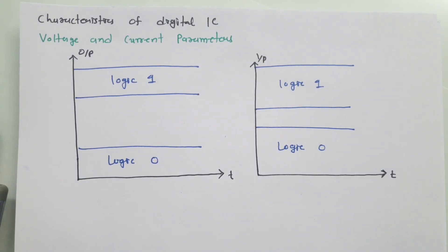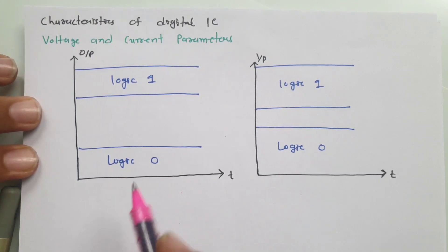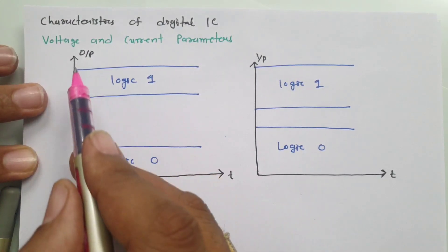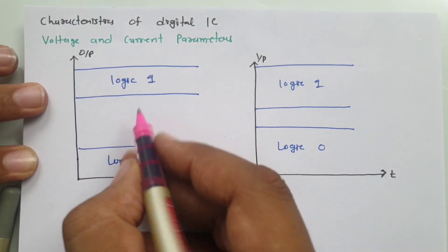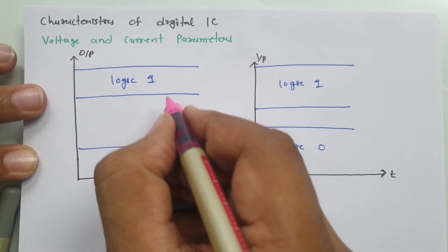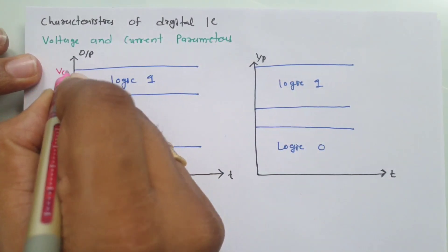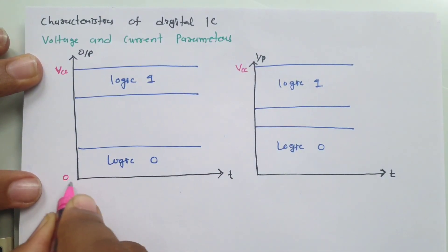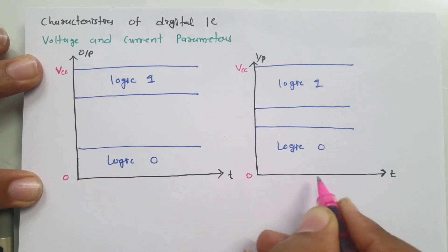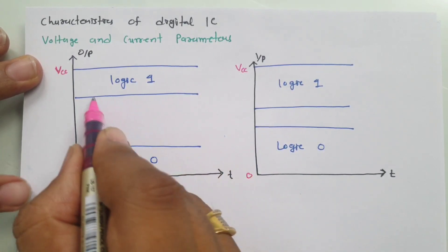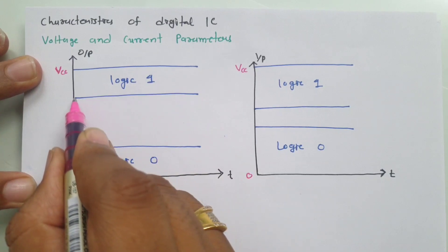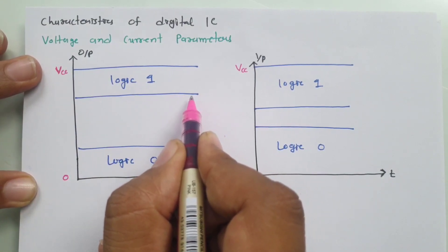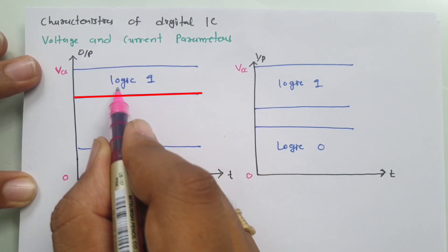Based on this, I'll explain the different voltage parameters of an integrated circuit. You can see this is the output voltage graph, where this is VCC and this is VCC for input voltage. This is voltage 0 for output, and this is voltage 0 for input. This line is the threshold voltage of the output to remain logic high.